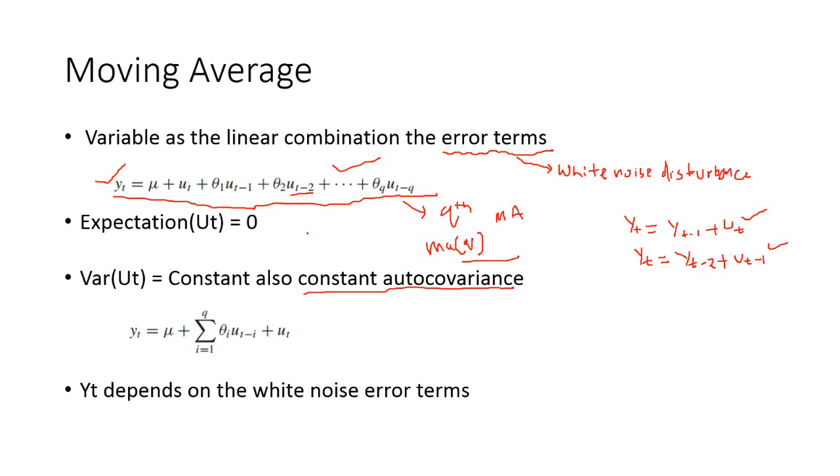The properties of the MA process or MA time series model are the following. The expectation of yt is constant, it is a constant mean. If you take the expectation here, you will get only the mu here, right? Because all other terms have the residuals, and the expectation of residuals is always 0.